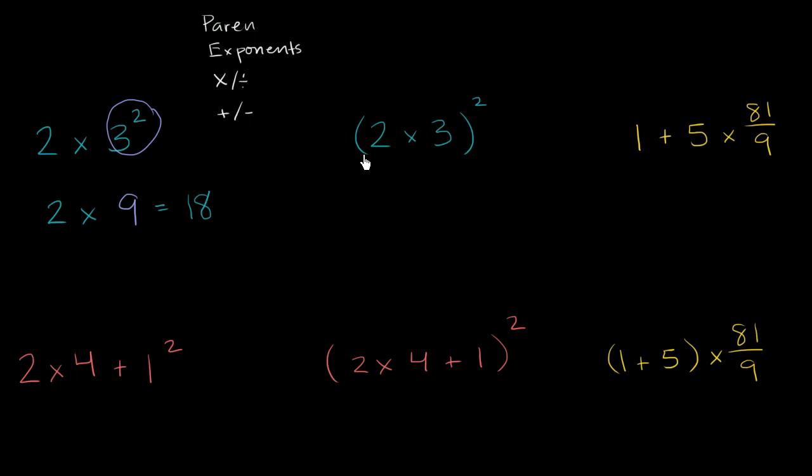Now let's look at this one. And this one is interesting because it looks like the same expression, but now there are parentheses. And because of these parentheses, we're going to do the multiplication before we take the exponent. So 2 times 3 is going to be 6. And we're going to take that to the second power. So that's 6 times 6, which is equal to 36.